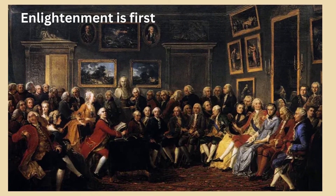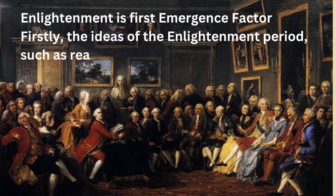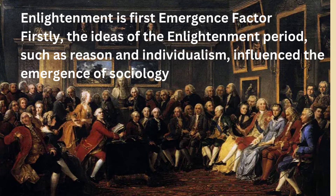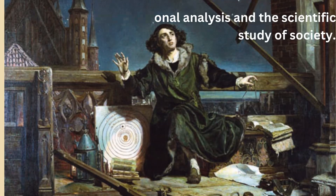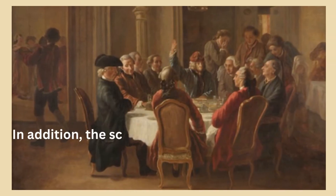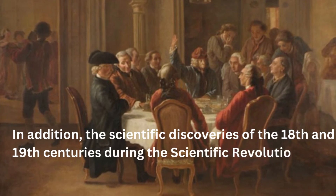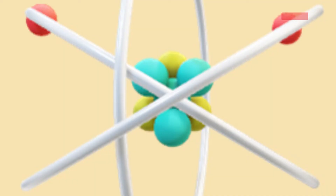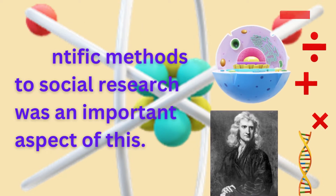Enlightenment is the first emergence factor. The ideas of the Enlightenment period, such as reason and individualism, influenced the emergence of sociology as a discipline. This emphasized rational analysis and the scientific study of society. In addition, the scientific discoveries of the 18th and 19th centuries during the scientific revolution also had an impact on the development of sociology. The application of scientific methods to social research was an important aspect of this.